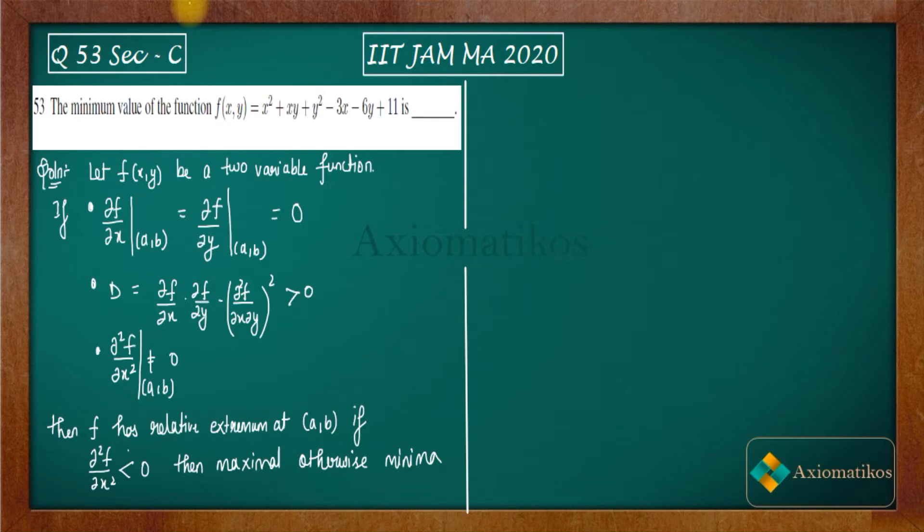We are saying that if ∂f/∂x = ∂f/∂y = 0 at (a,b), and D is greater than 0 and non-zero, then f has relative extrema at (a,b). If ∂²f/∂x² is less than 0 then maxima, otherwise minima.